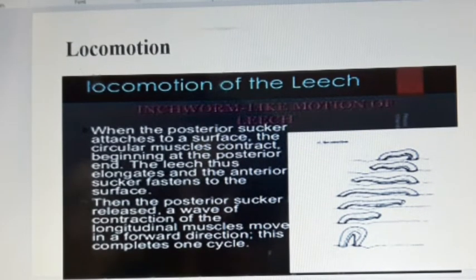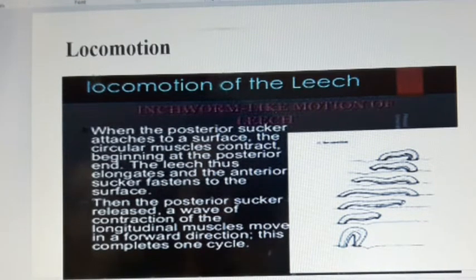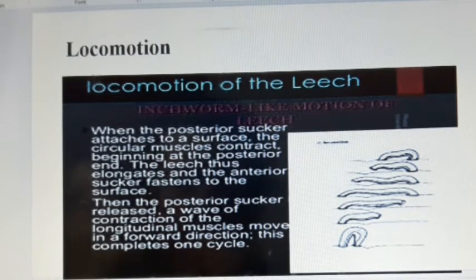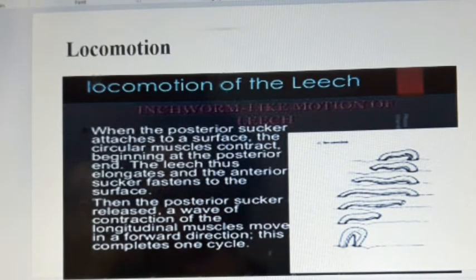Now we have locomotion of Hirudinea. These modifications have resulted in altered patterns of locomotion. The leech has a single hydrostatic cavity and uses it in the looping type of locomotion. The leeches also swim using undulation of the body. Attachment of the posterior sucker causes reflexive release of the anterior sucker, contraction of circular muscle and relaxation of longitudinal muscles.